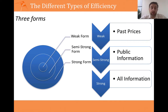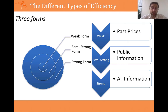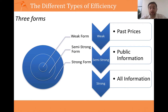In a previous video I talked about efficient markets and what is required for you to achieve efficiency. In this video we're going to be talking about different types of efficiency, and we'll start off with the easiest type of market efficiency to achieve, and that is weak form. Weak form market efficiency means that the price that you see today for an asset incorporates the information in all past prices.